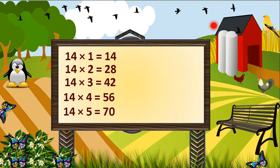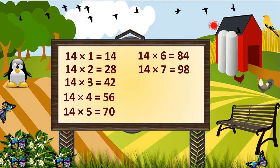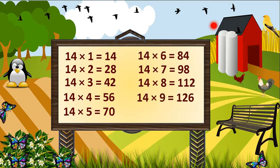14 5's are 70. 14 6's are 84. 14 7's are 98. 14 8's are 112. 14 9's are 126.